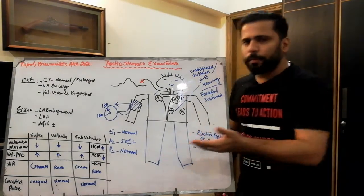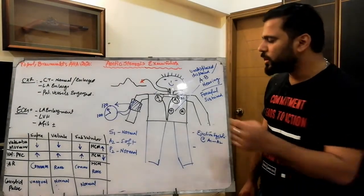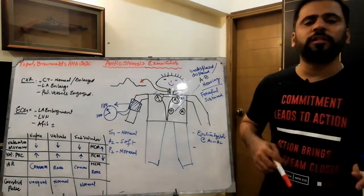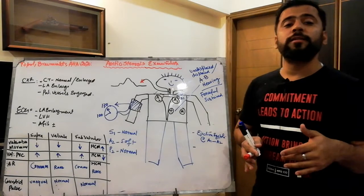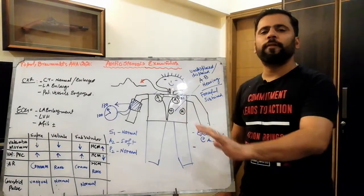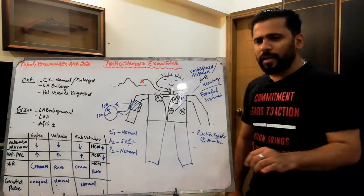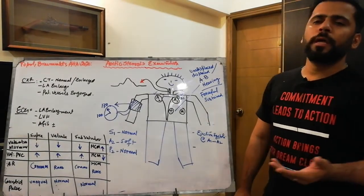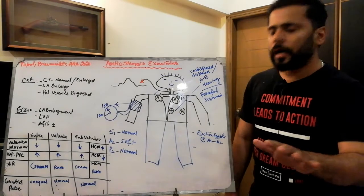After that, you examine the precordium. On inspection look for visible pulsations, then check the apex beat. The apex beat would usually be undisplaced — if the ejection fraction is normal and the patient does not have mixed valvular disease such as aortic regurgitation. The apex beat would be heaving in character, forceful and sustained.